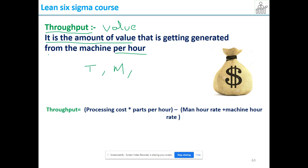Let us see what throughput really is. The formula for throughput is: processing cost times parts per hour that the machine is producing, minus man hour rate plus machine hour rate. I am doing minus here because this is my investment or input, and this is the output or value that the machine is giving me. Therefore, we get the throughput - the exact value the machine is giving me.